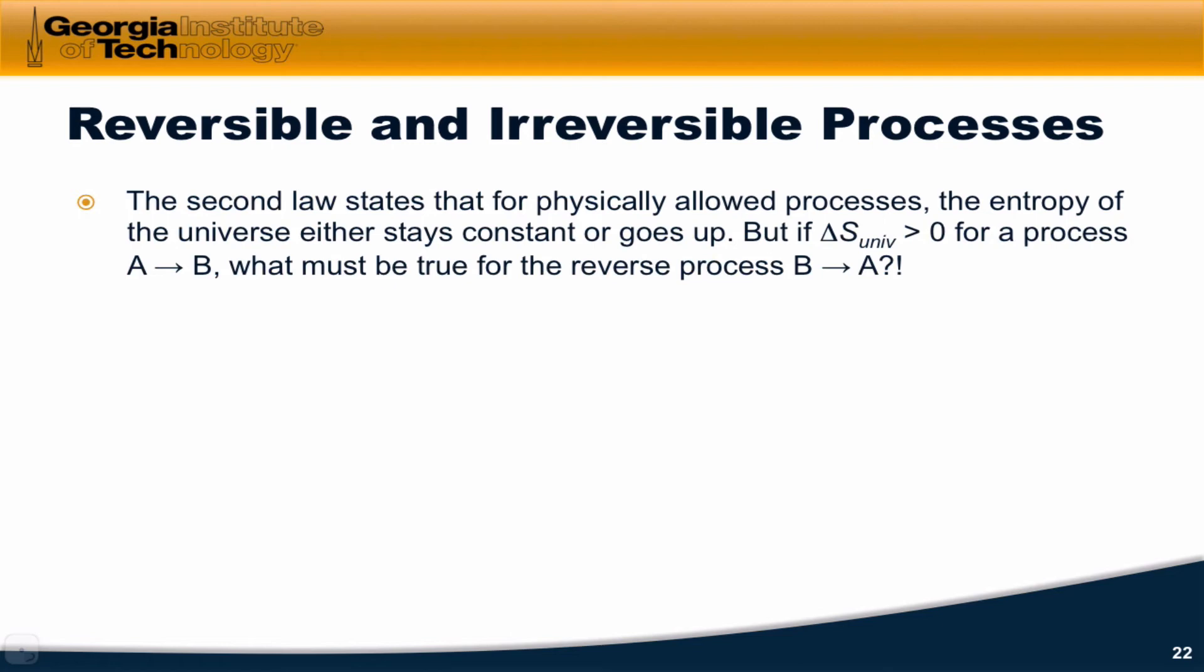Delta S or dS equals zero, or increase, delta S or dS greater than zero. But for a particular process occurring within the universe, if delta S of the universe is greater than zero for the process of converting A to B within a system, what must be true for the reverse process, B to A?